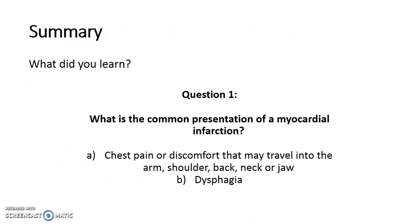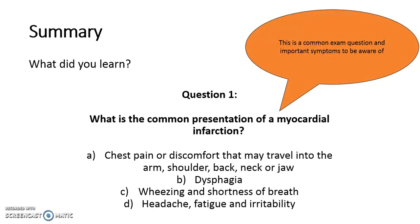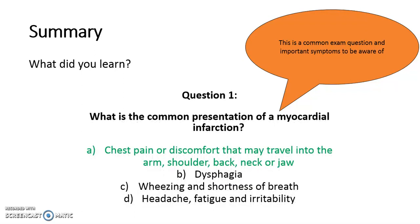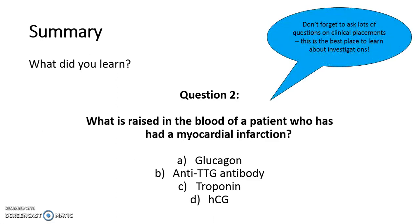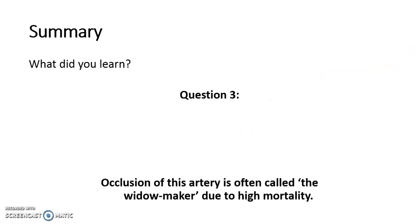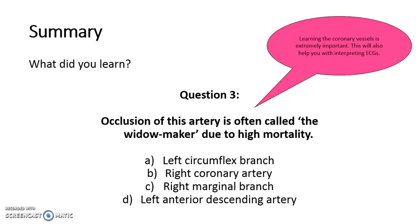Let's quickly go through the questions we discussed. What is the common presentation of a myocardial infarction? The answer is chest pain or discomfort that may travel into the arm, shoulder, or back. And for question two, the raised blood marker is troponin. Finally, the widow-maker artery is the left anterior descending artery. Thank you so much for listening — I hope that was useful.